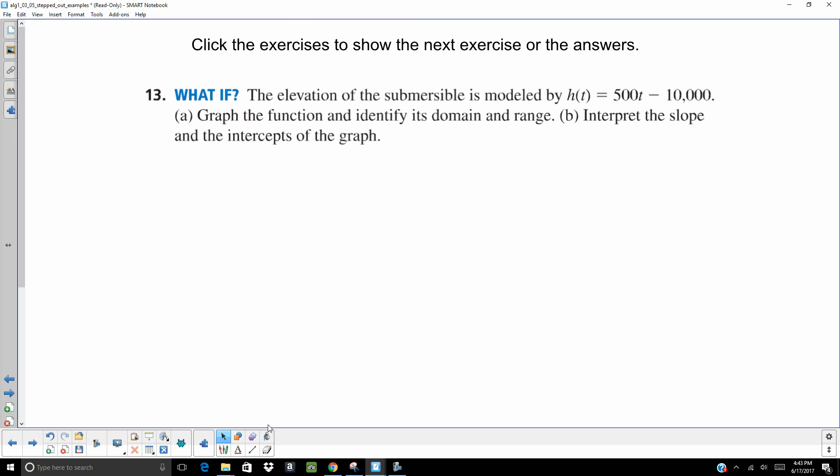Try this one on your own. If the elevation of the source pool is modeled by H of T equals 500 T minus 10,000. Graph. Identify the domain and range. Interpret the slope and the intercepts. Go ahead and hit pause when you're ready to check your answers. Hit play.